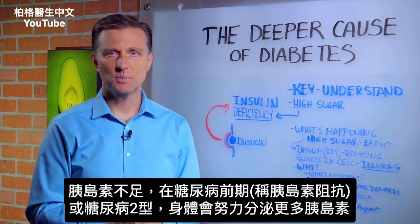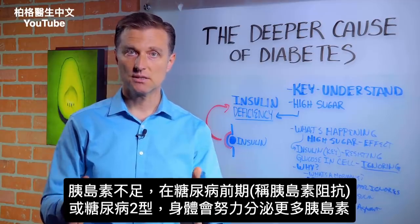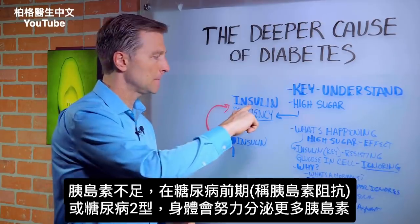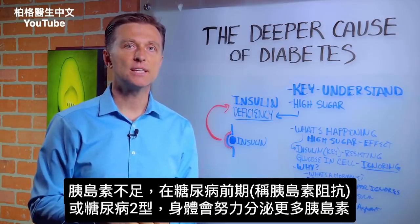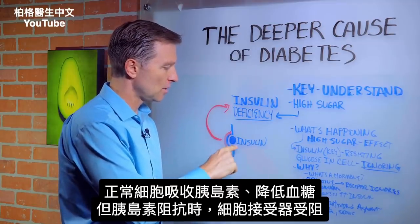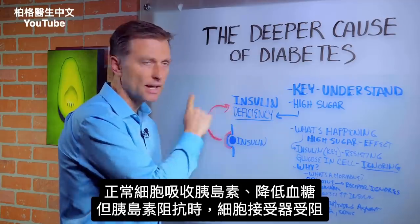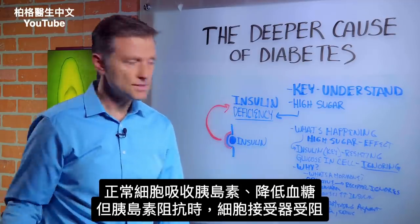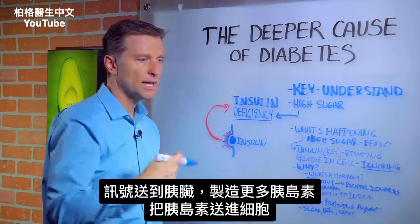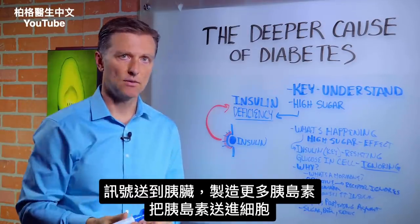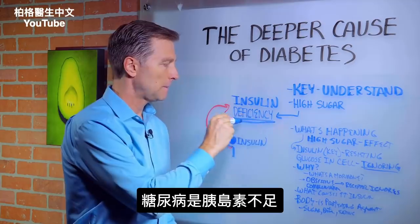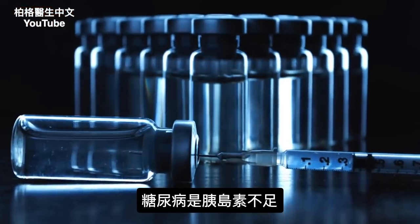When you have insulin deficiencies, especially in a pre-diabetic state called insulin resistance, or just type 2 diabetes in general, you have a situation where your body makes more insulin to compensate for the insulin deficiency. So if you look at the cell, the cell absorbs insulin and it's supposed to create an effect of lowering the blood sugar. With insulin resistance, the receptor starts blocking, then a signal is sent to the pancreas, and it starts making more and more insulin to drive that communication into the cell. But the first thing that happens is an insulin deficiency.